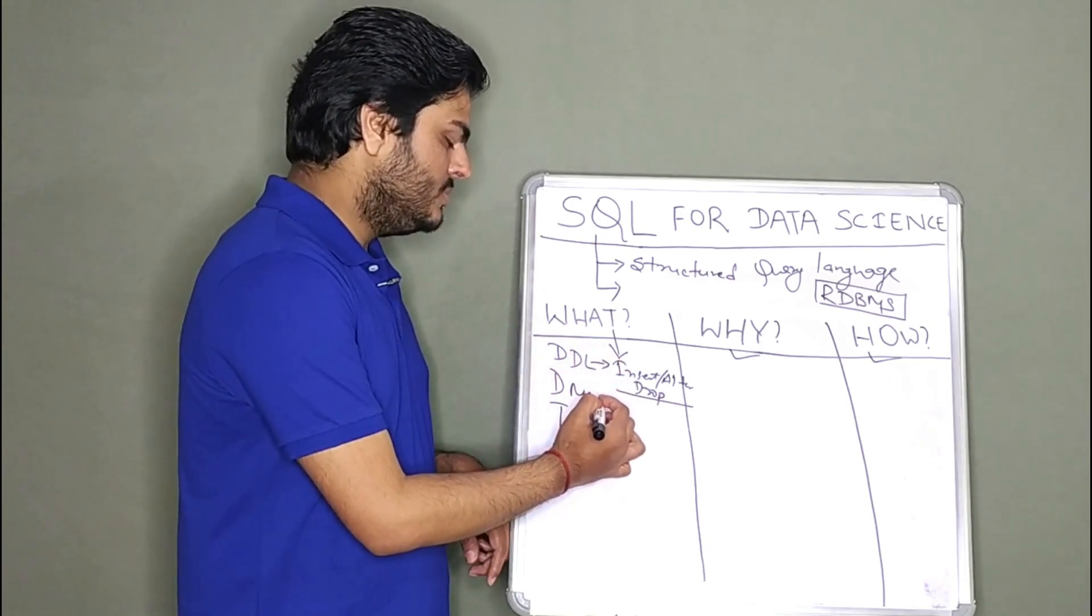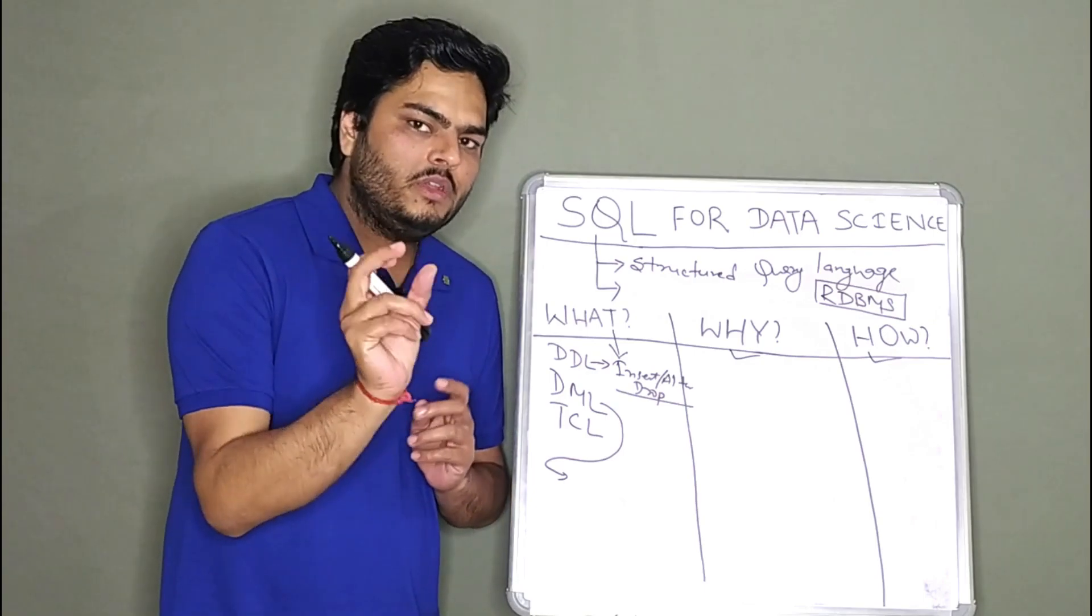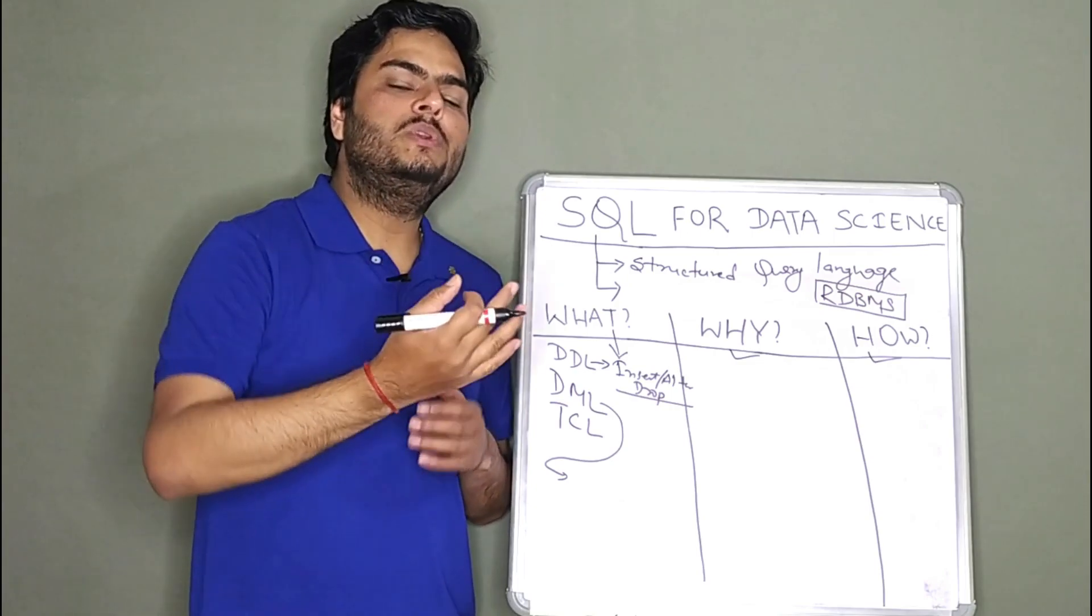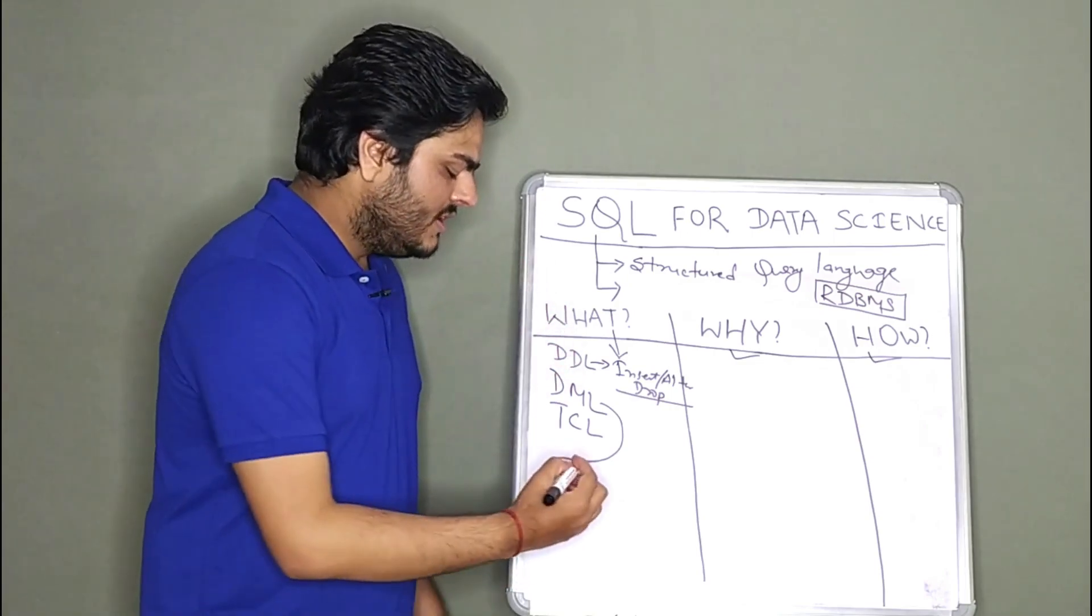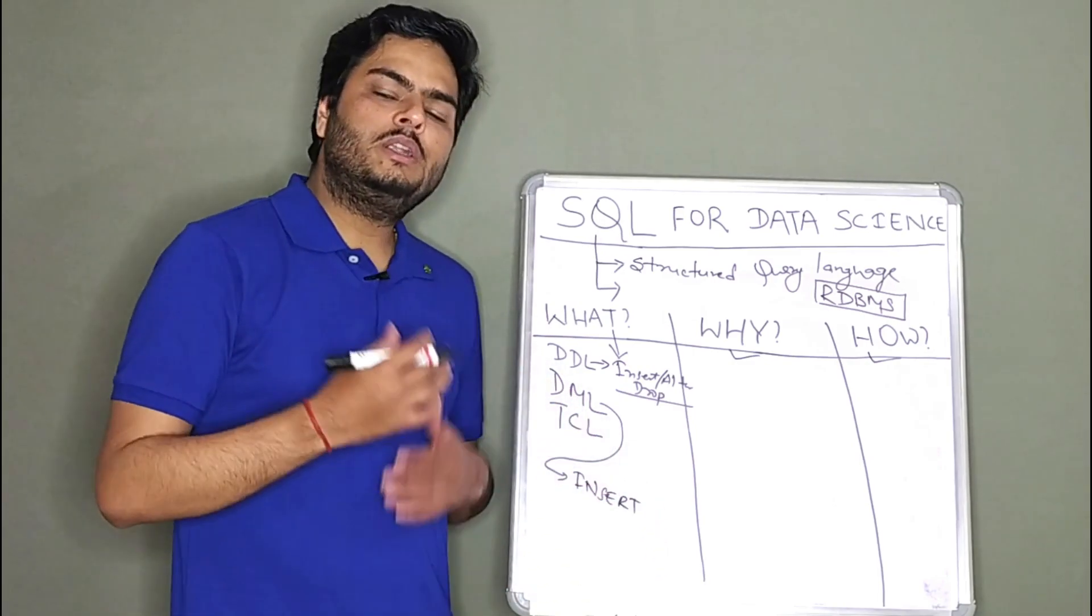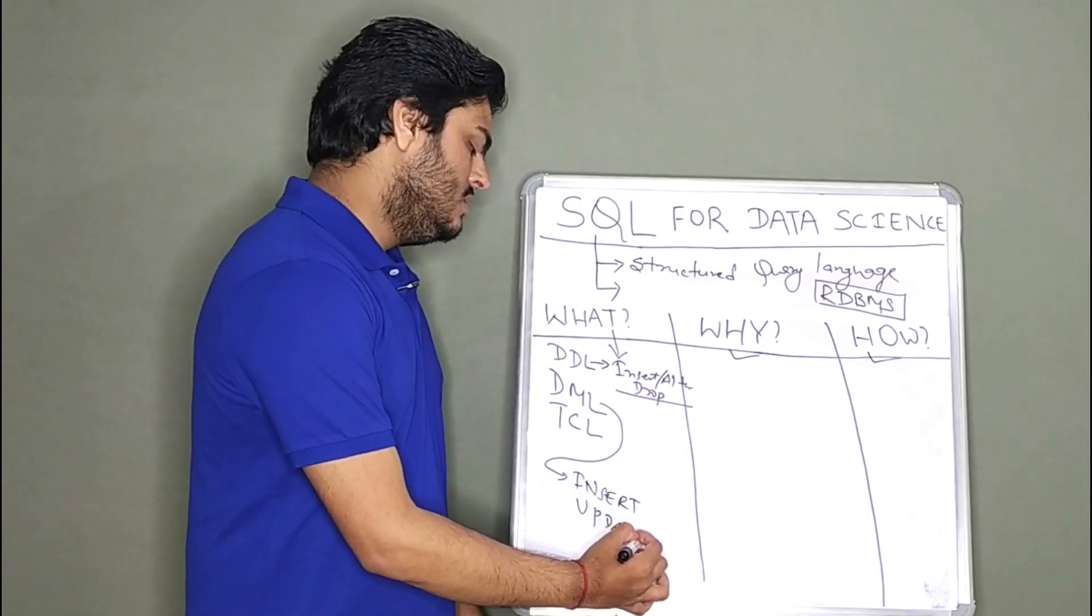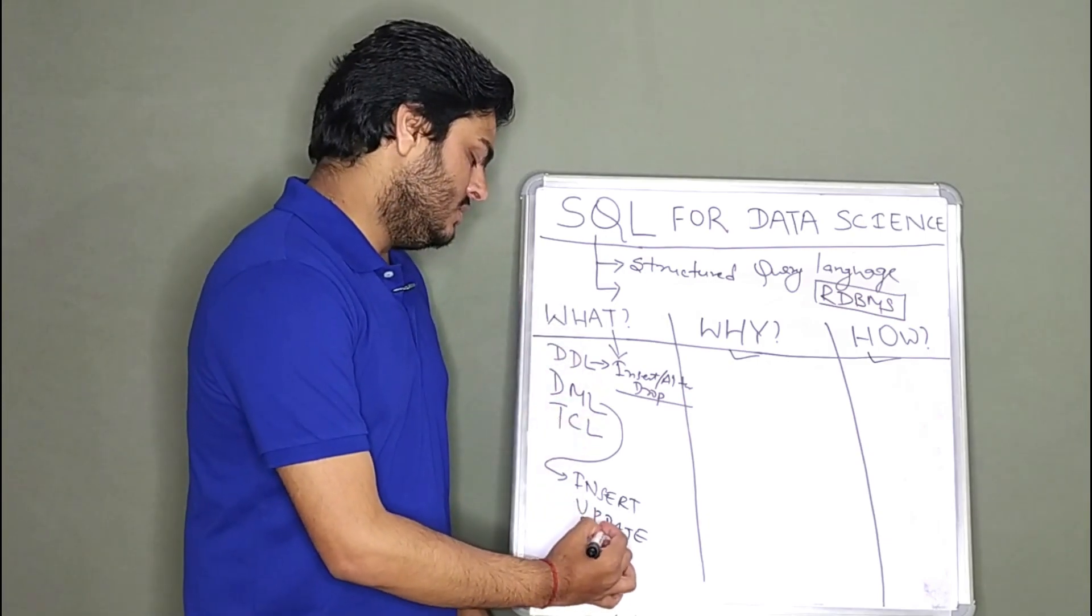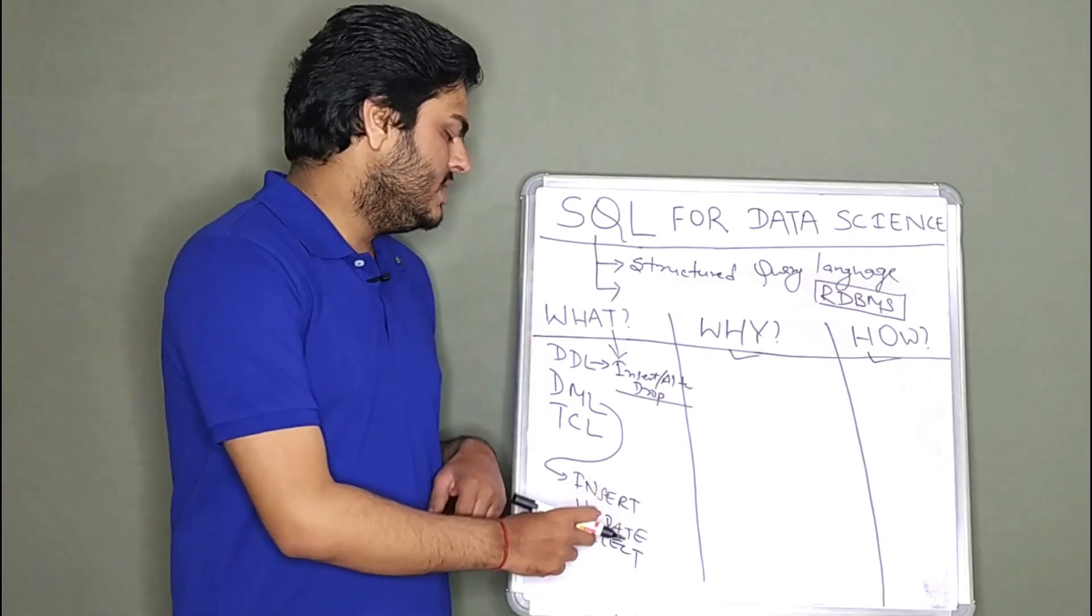What is data manipulation language? Data manipulation language is all the commands in SQL using which you interact with the data or you manipulate the data inside the table. What are those commands? For inserting the data in the table, you use insert. For updating the data in the table, you use update. For selecting or viewing the data in the table, you use something known as select. These kind of statements come under the category of DML.